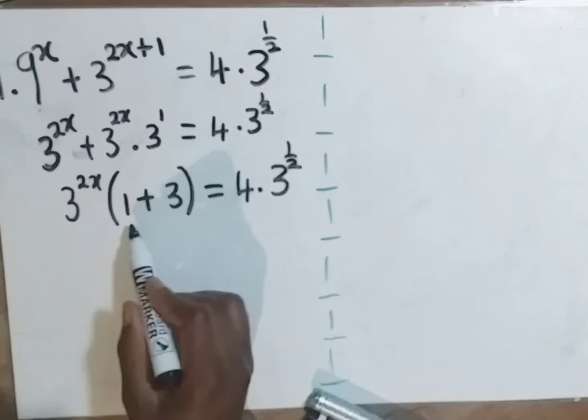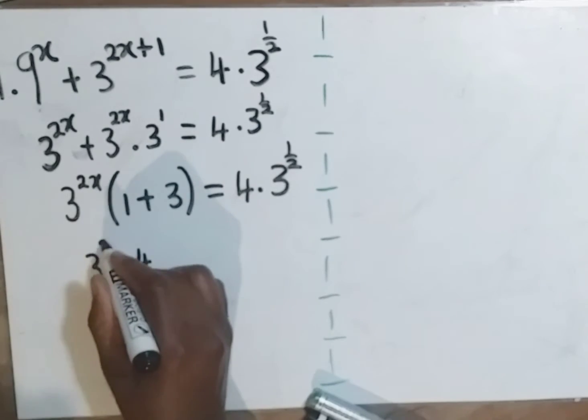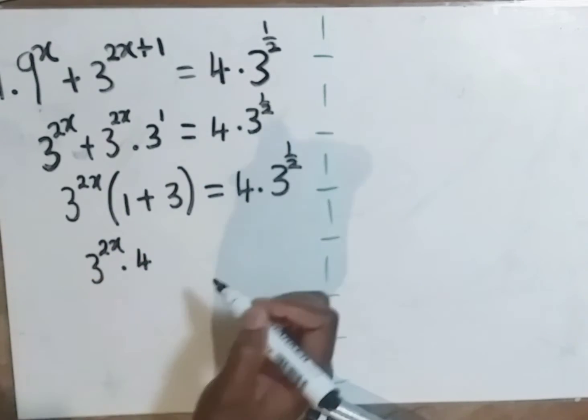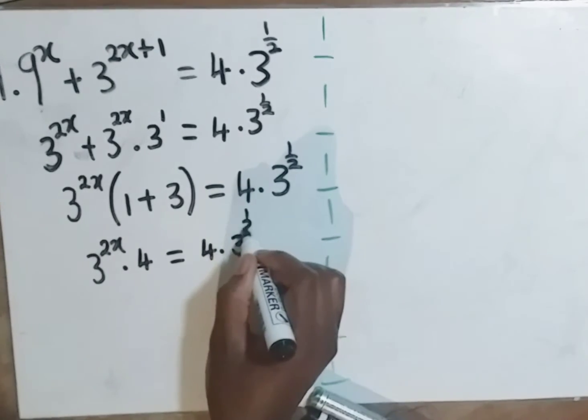What is 1 plus 3? It's a 4. So this is 3 to the power 2x dot 4 is equal to 4 dot 3 to the power half.